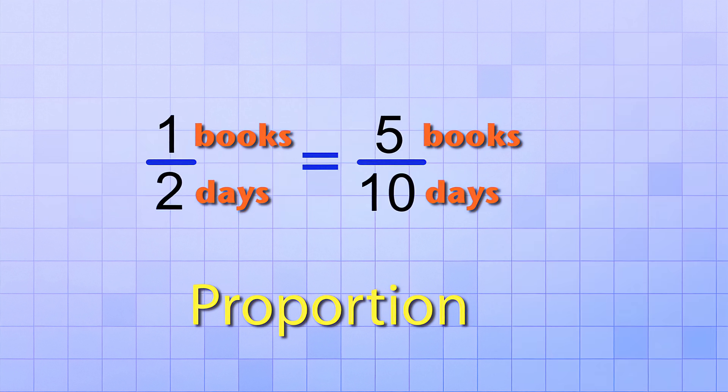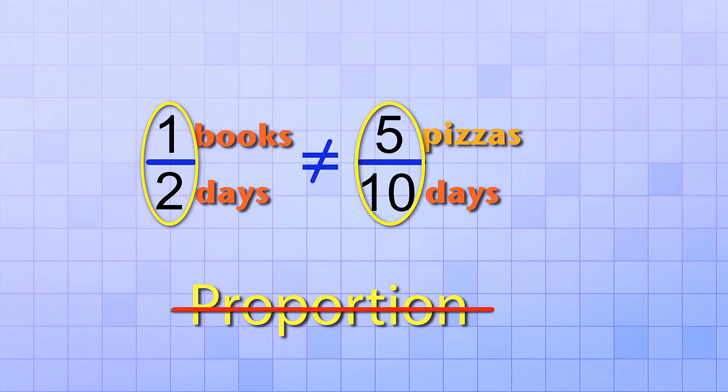This is a proportion because the top numbers both refer to books and the bottom numbers both refer to days. But what if we change the top unit of the second ratio to be pizzas instead of books? 5 pizzas in 10 days is not equivalent to 1 book in 2 days. So even though the numbers are still the same, this is no longer a proportion.